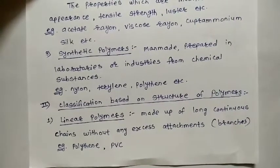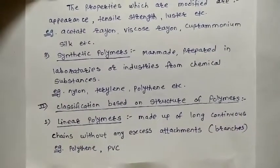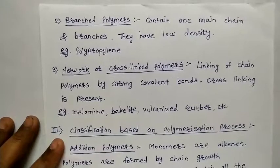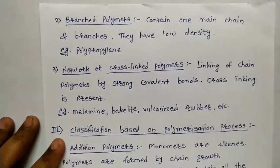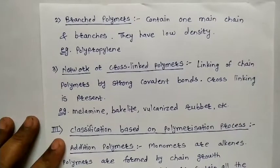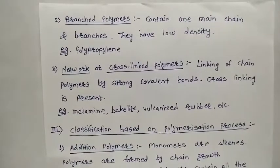Linear polymers don't contain any kind of branches or attachments. Examples include polythene and PVC, whose long form is polyvinyl chloride. The second type is branched polymers. These polymers contain one main chain with some small branches attached to it. A very important property of branched polymers is that they have low density.